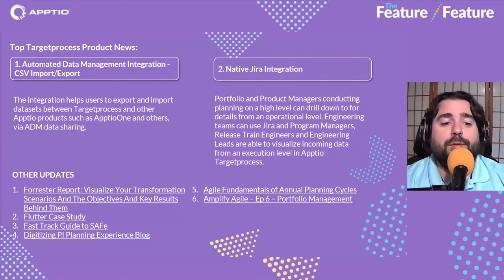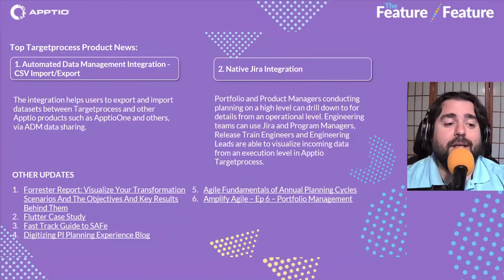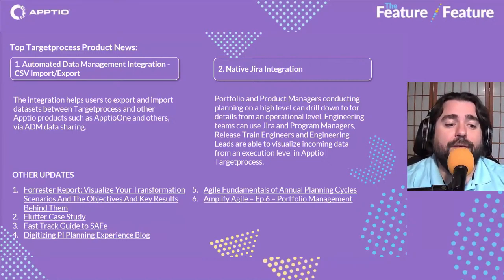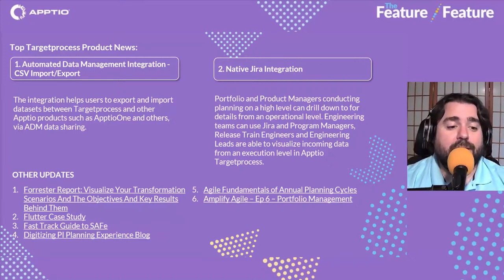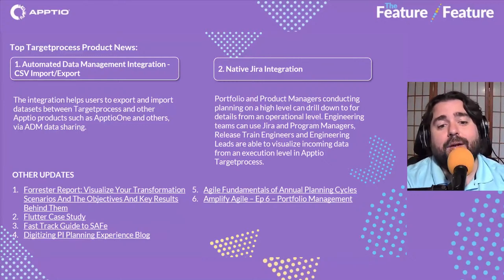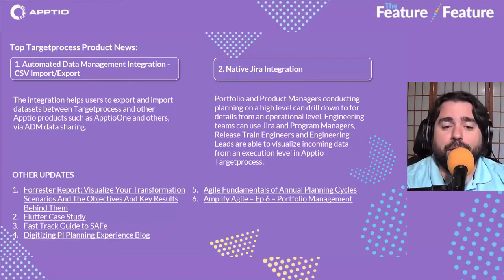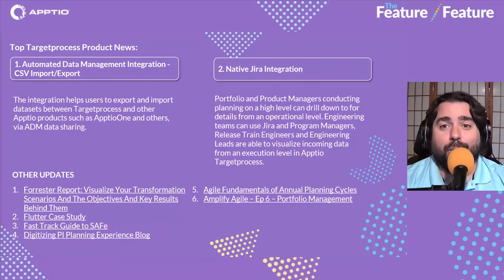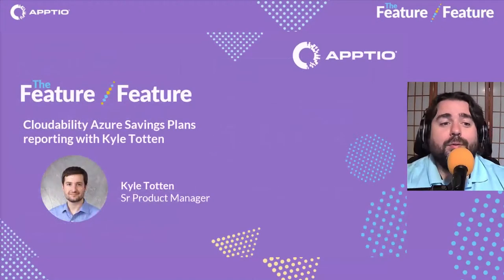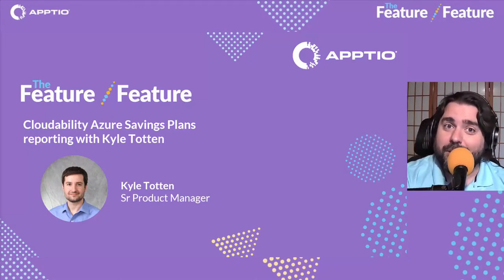We also have a Forrester report — 'Visualize Your Transformation Scenarios and the Objectives and Key Results Behind Them' — added to the content on our website. There's a new case study with Flutter, a fast track guide to the SAFe framework for agile, a new digitizing PI planning experience blog, and an agile fundamentals of annual planning cycles blog. Our Amplify Agile series also has a new episode out on portfolio management — check that out. We're now going to dive into the conversation with Kyle Totten about Cloudability Azure savings plans reporting.